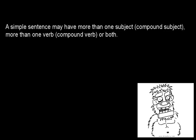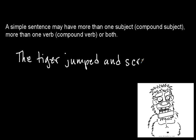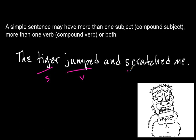Or it can have both. So going back to our example, we can have: the tiger jumped and scratched me. So we have one subject, but we have a compound verb. The critical thing is that they both relate back to that same subject — both related to one central idea. There may have been more than one action, but it was still one event.